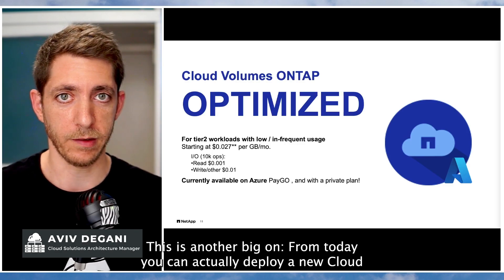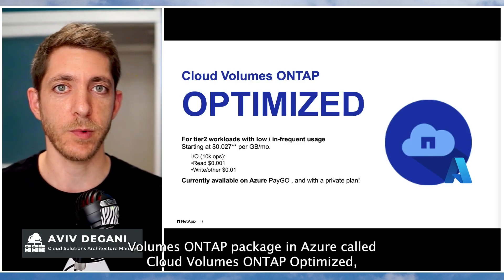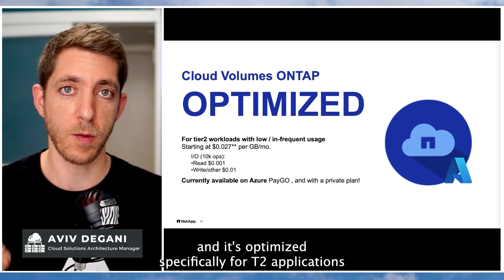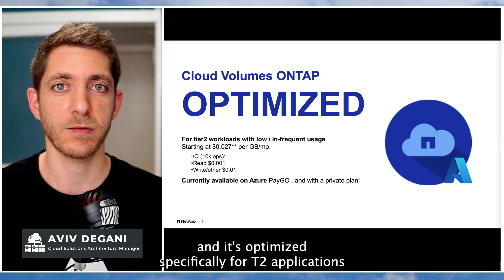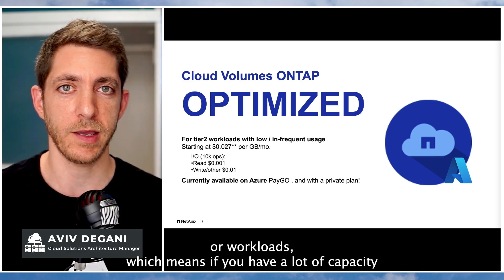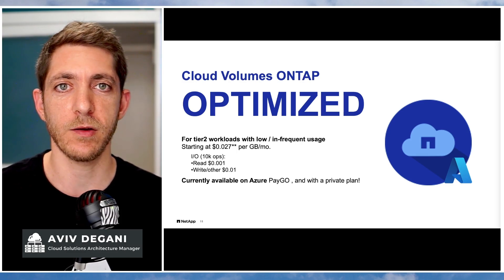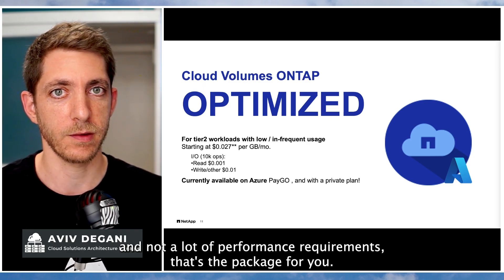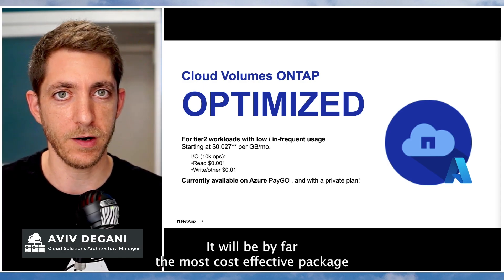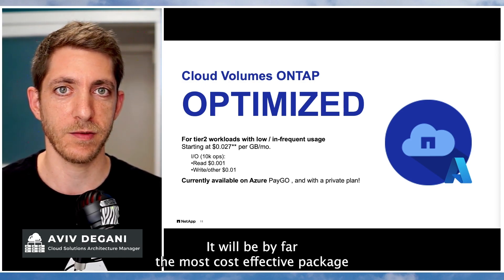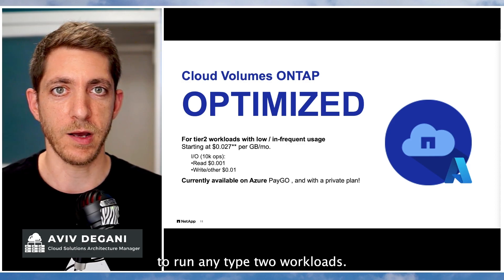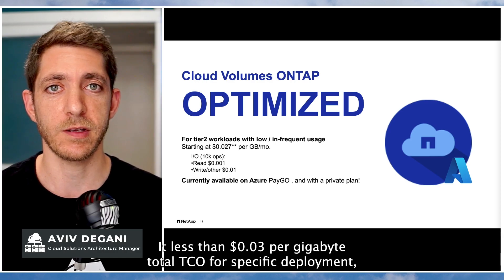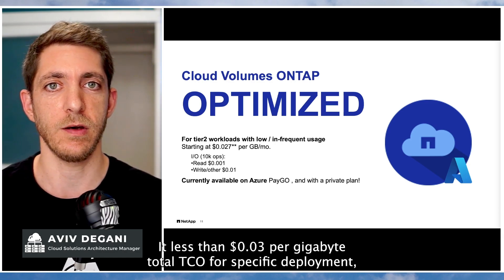This one is big: from today you can deploy a new CVO package in Azure called Cloud Volumes ONTAP Optimize. It's optimized specifically for Tier 2 application workloads — meaning if you have a lot of capacity but not a lot of performance requirements, this is the package for you. It's by far the most cost-effective package for Tier 2 workloads, at less than 3 cents per gigabyte total TCO for that deployment.